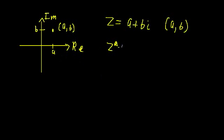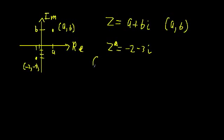For example, if we want to plot z* = -2 - 3i, we go left 2 on the real axis and down 3 on the imaginary axis and plot this point here. This would be the coordinate (-2, -3), with the understanding that -2 is the real part and -3 is the imaginary part. This is one way we can describe or plot complex numbers, and we're going to call this the Cartesian form.